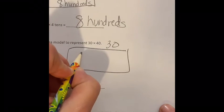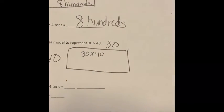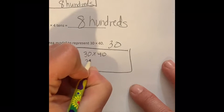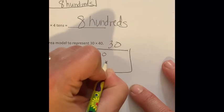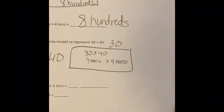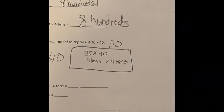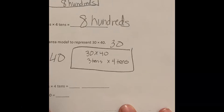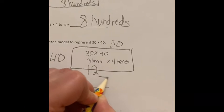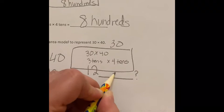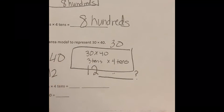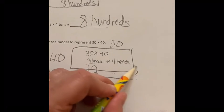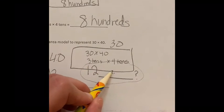Well, what would 30 times 40 be? It's going to look like this: 30 times 40. And then I'm going to say 3 tens times 4 tens. Well, what would 3 tens times 4 tens be? Well, I know that 3 times 4 is 12. So it's going to be 12. So 30 times 40, what will my final answer be?